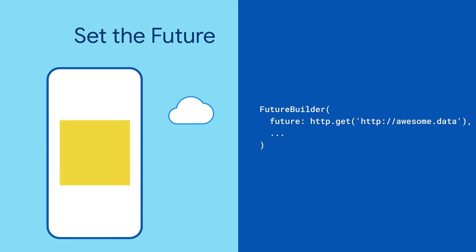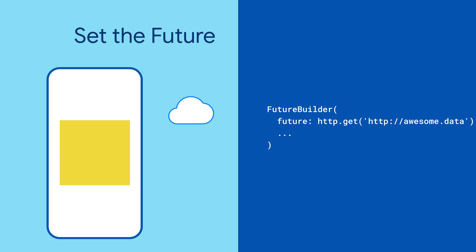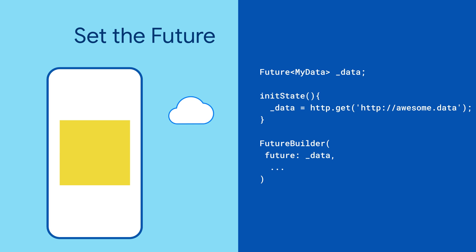Start by giving FutureBuilder a future. But wait — you don't want to create the future inside of the FutureBuilder. As this code stands, the data fetching will restart every time the FutureBuilder's parent is rebuilt. Instead, obtain the future earlier on, like within a widget lifecycle method. So create a new state variable and move this data fetching request out of FutureBuilder and into its state.